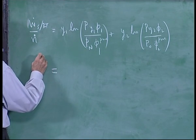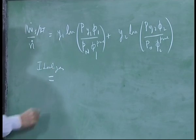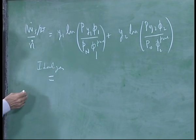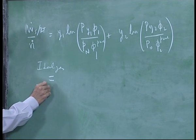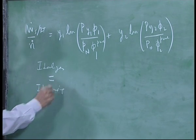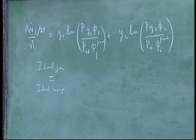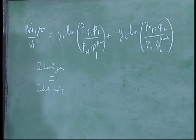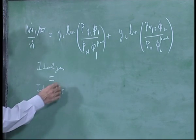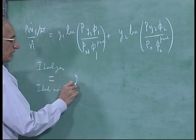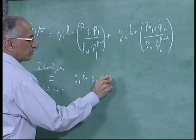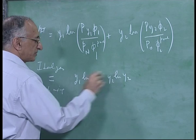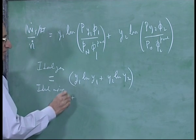The simplest case is this. If you assume ideal gas and ideal mixing. If you assume ideal gas, phi1 pure and phi2 pure are 1, and ideal mixing means phi1 is equal to phi1 pure, that is also equal to 1. So the phi's will cancel.